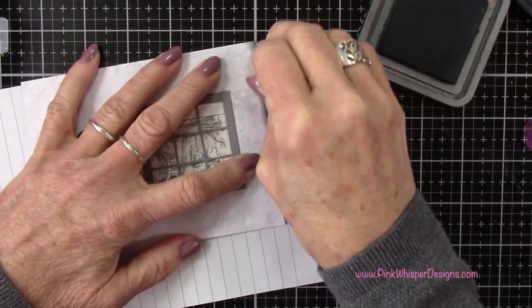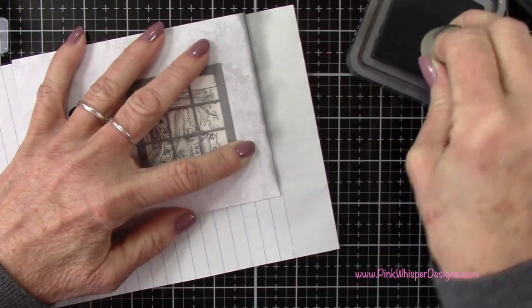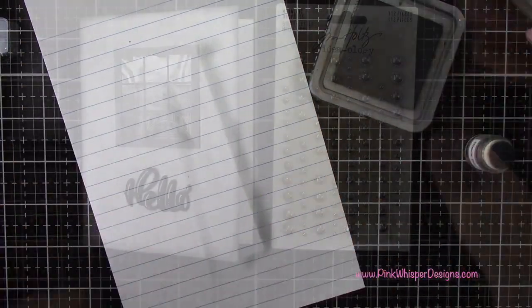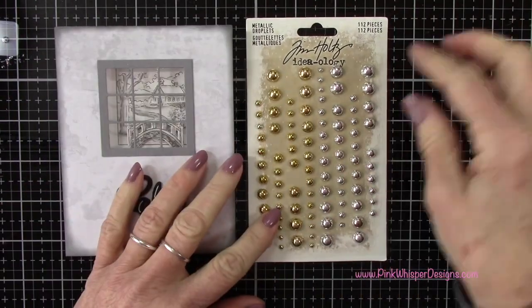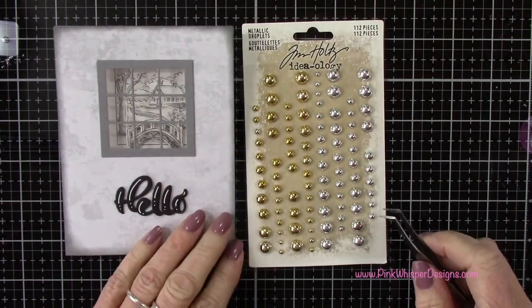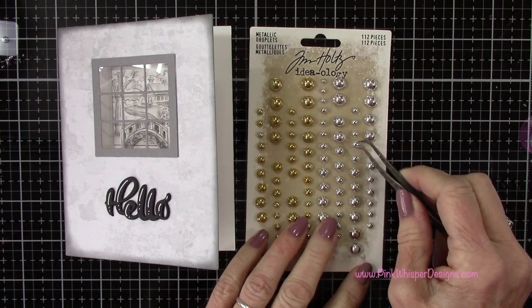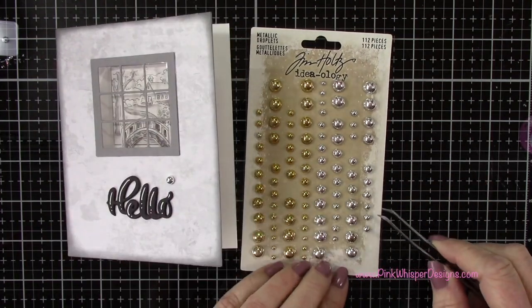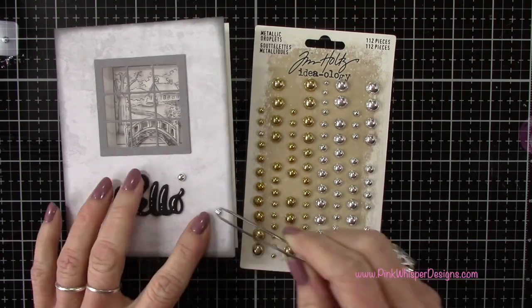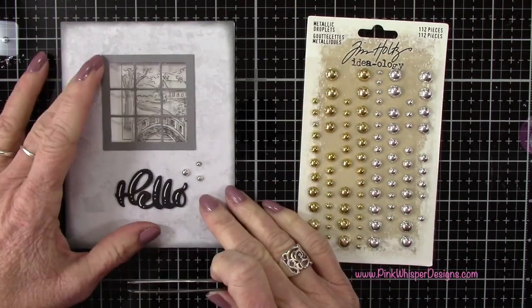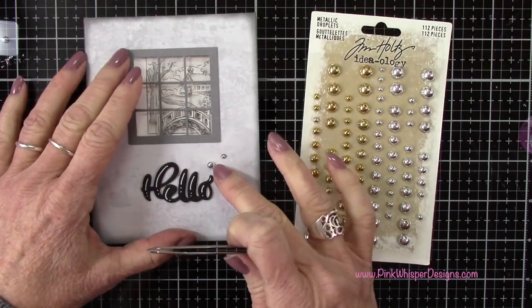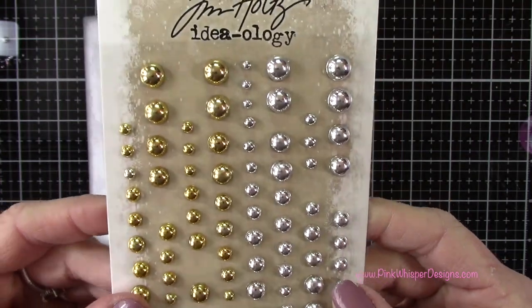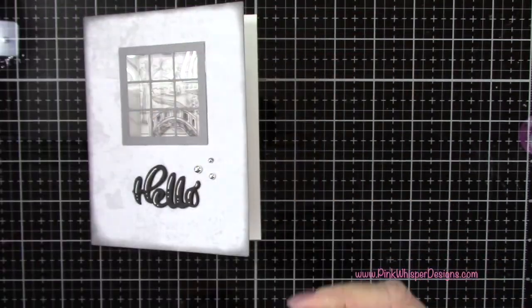The reason I'm using the dauber is because I don't want too much. I just want a nice little bit of a shadow around the edges here. By using the dauber, I can have a little bit more control over the amount of ink that I use. Now I've got these beautiful little metallic droplets. These are from the Tim Holtz Ideology Collection. I'm just going to add three of those little silver droplets right here on the front of the card. They do come in three sizes which is really nice. You kind of have a small, medium, and large there.